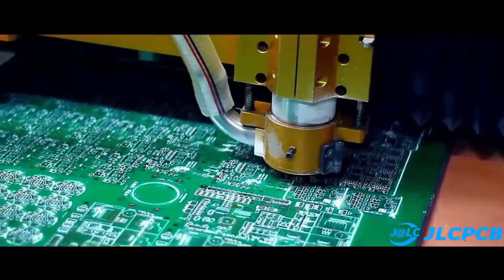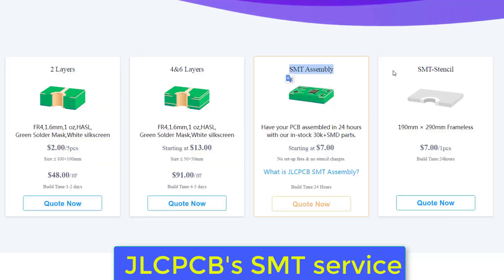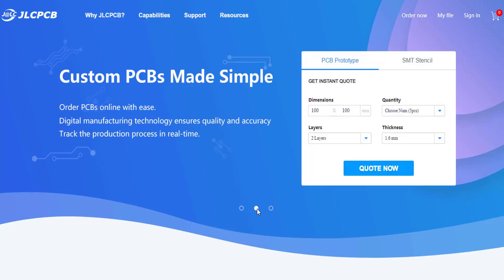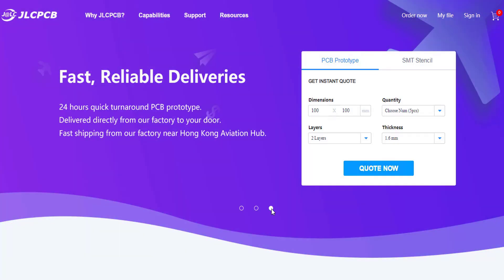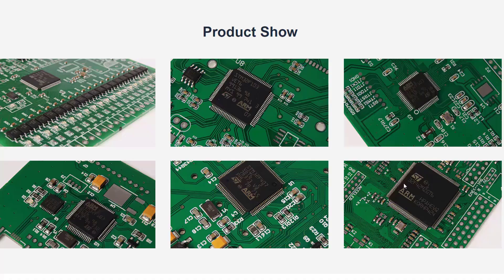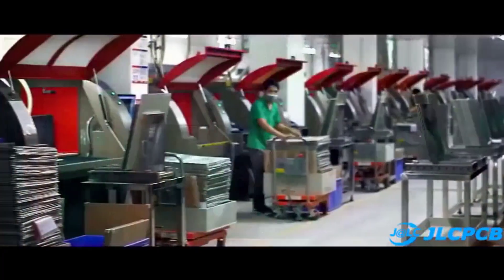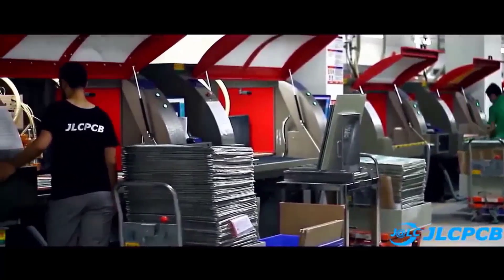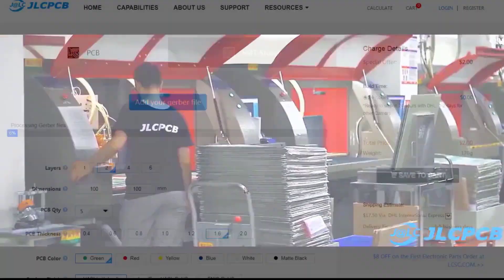This video is sponsored by JLCPCB. One fact about them, JLCPCB is the largest PCB prototype enterprise in China. With over 10,000 online orders of PCB prototyping and small quantity PCB production per day. The monthly PCB production capacity is 400,000 square meters for various one layer, two layer or multilayer PCB.